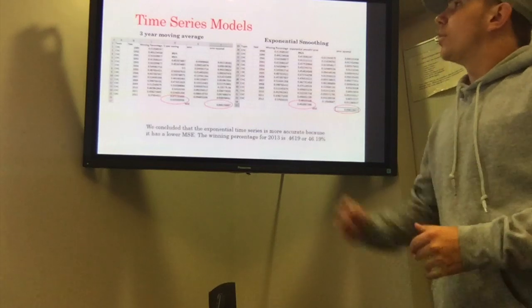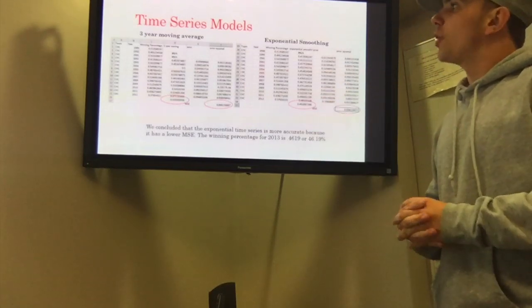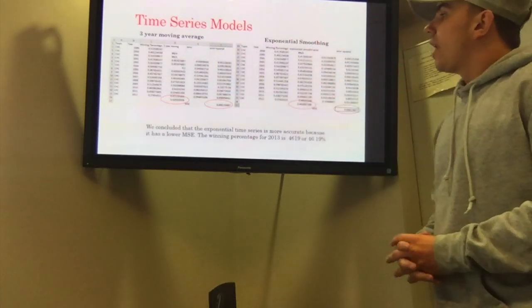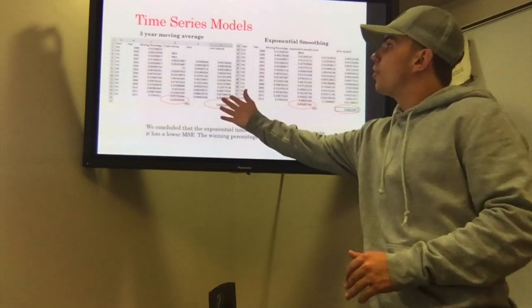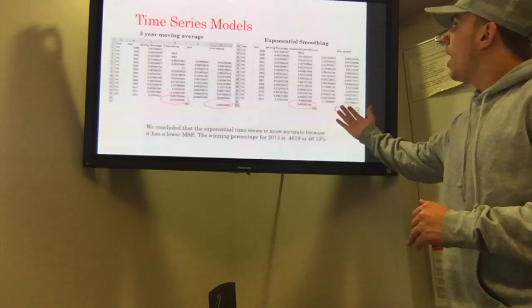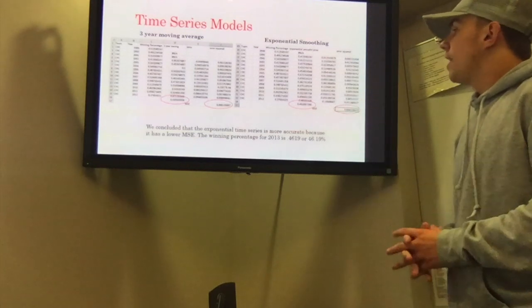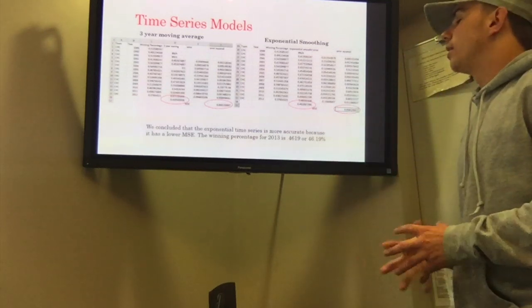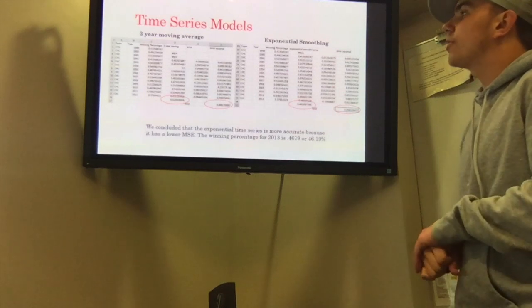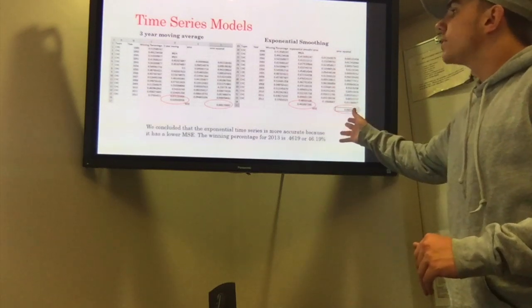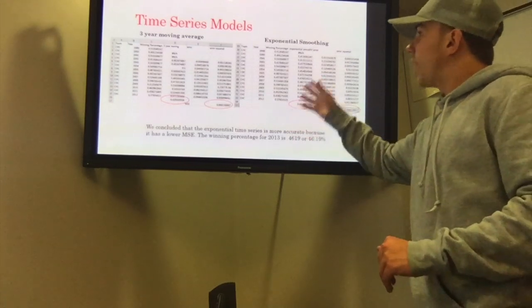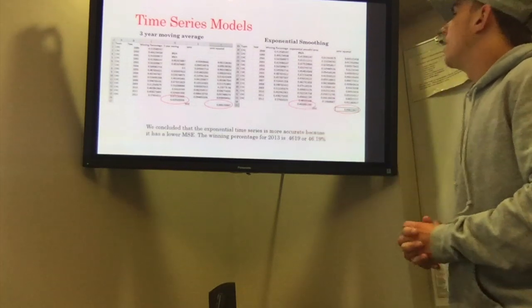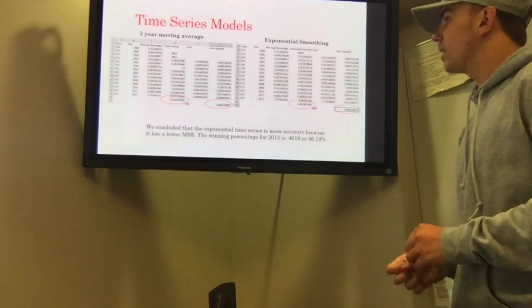We decided we wanted to do a time series model to test our data. So we used a three-year moving average and exponential smoothing. And as you can see, our MSE, this is our MSE for the three-year moving average and our MSE for the exponential smoothing. These are very closely related, but exponential smoothing was a little bit lower than our three-year moving average, so this would be a more accurate data. And the predicted winning percent, exponential smoothing prediction was 0.4618 or 46.18% chance of winning in 2013.